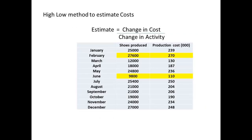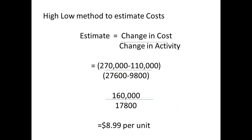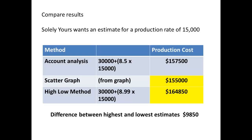A third method to estimate costs is to use the high-low method. The estimate for unit costs is based on the change in cost and the change in level of activity. The highlighted area shows the figures used for the calculation. Dividing the change in cost by the change in level of activity gives a unit cost of $8.99. Managers may look at all three methods — to produce 15,000 pairs of shoes, the estimates vary between $155,000 and almost $165,000, with the actual difference between the lowest and highest estimates being $9,850.